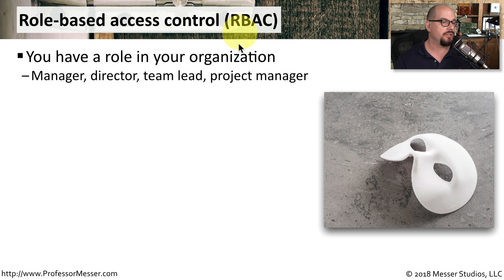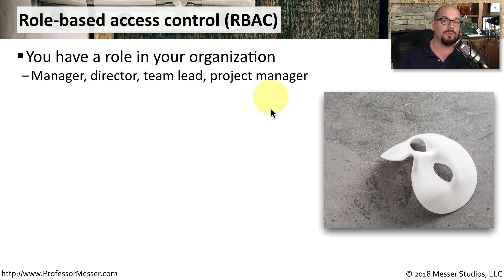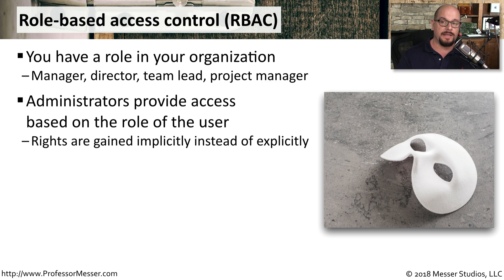Role-Based Access Control, or RBAC, is a much broader form of control based on your particular role in the organization. You might be a director, a team lead, or a manager, and the type of access you have to an object depends on that role. With RBAC, the administrator determines what type of access a user has, but this is also an implicit type of rights. For example, if the administrator provides access to managers and directors happen to be in the manager group, then the directors will also gain those rights.